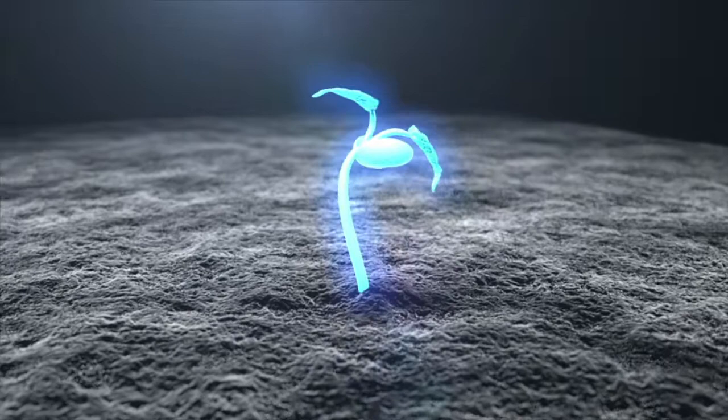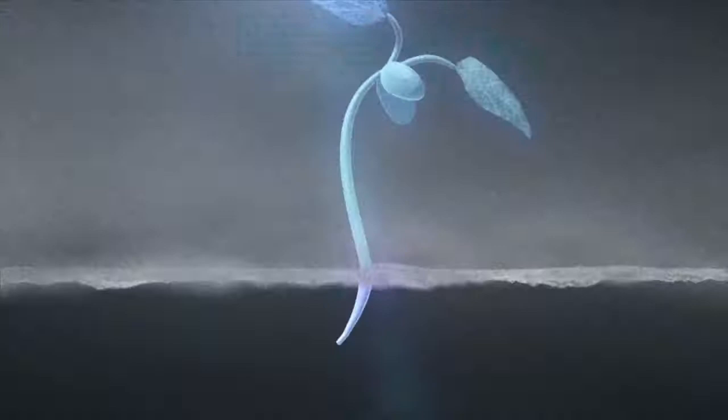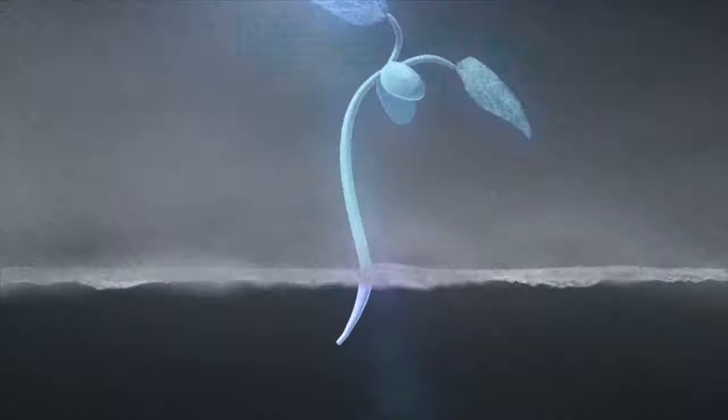The reduction in soil compaction and increased aeration results in explosive feeder root growth. The increase in root surface area optimizes the uptake of water and nutrients from the soil and increases the ability of the plant to withstand stress, whether temperature or moisture related.